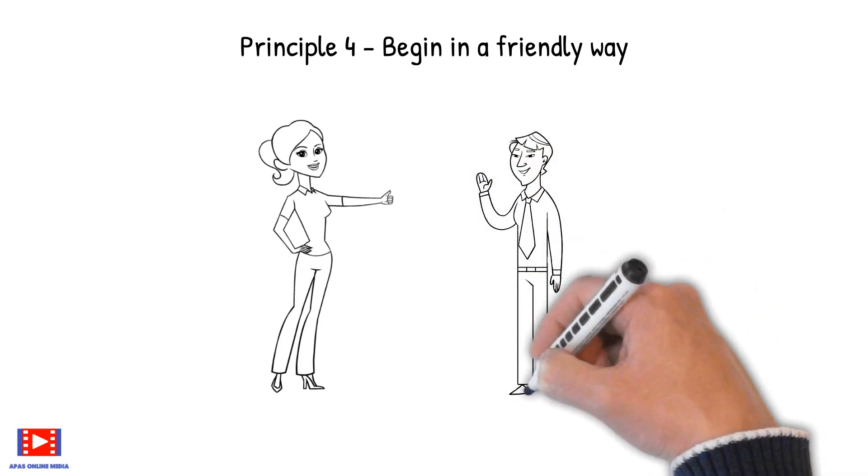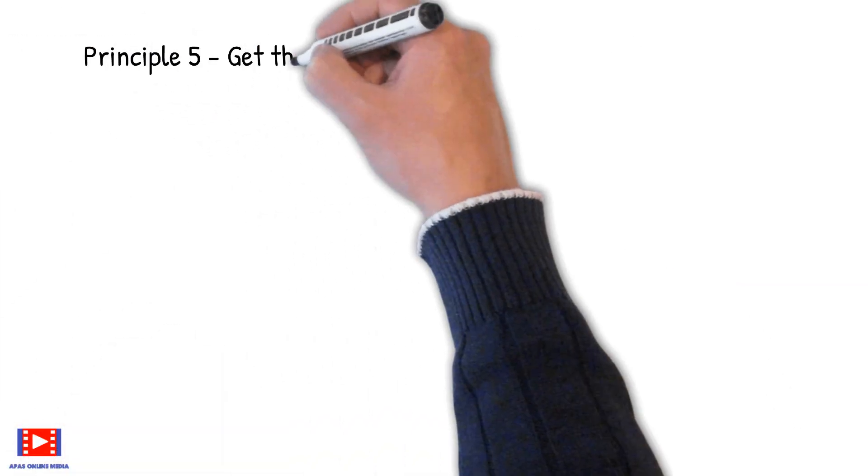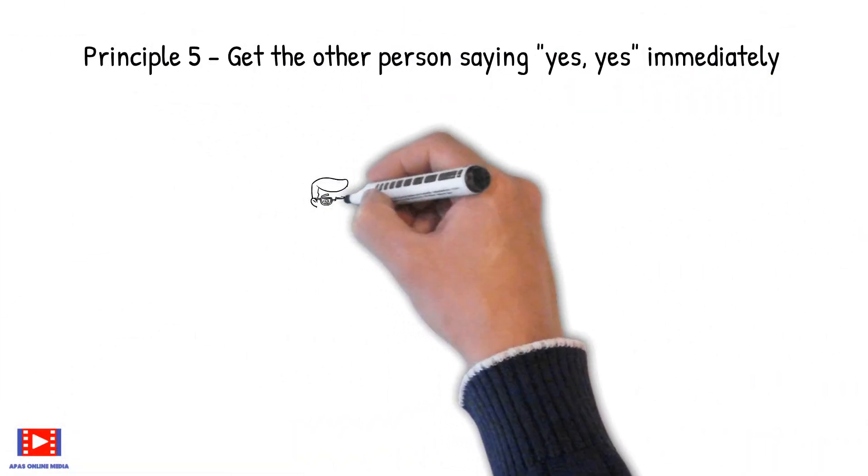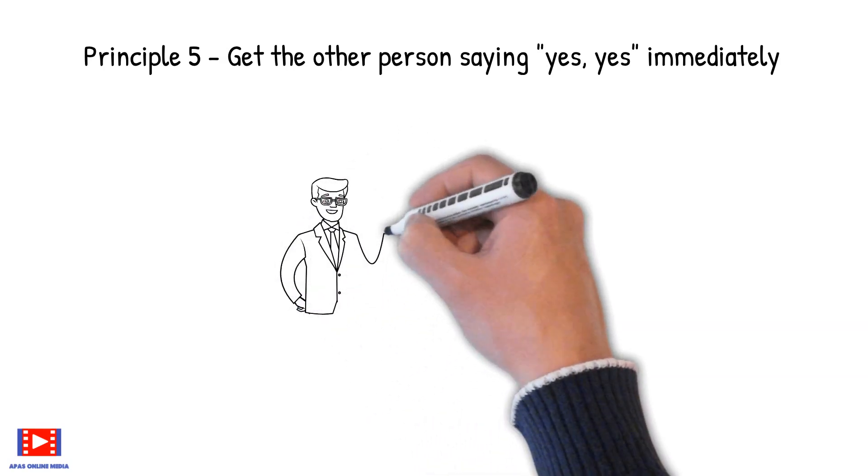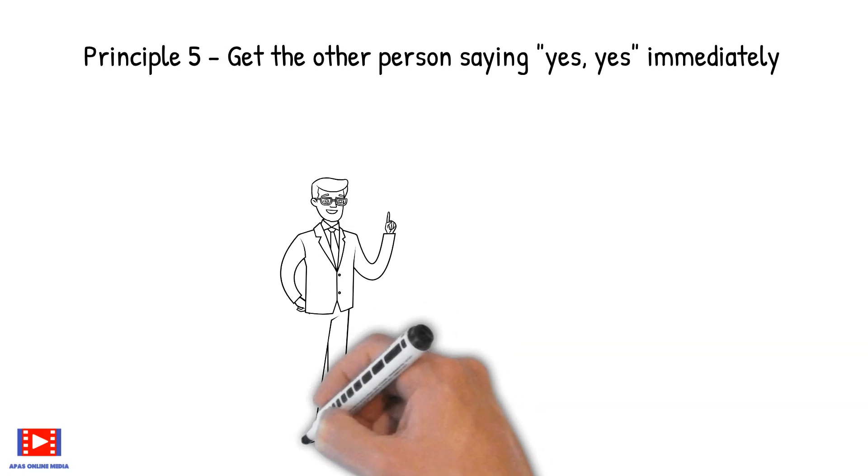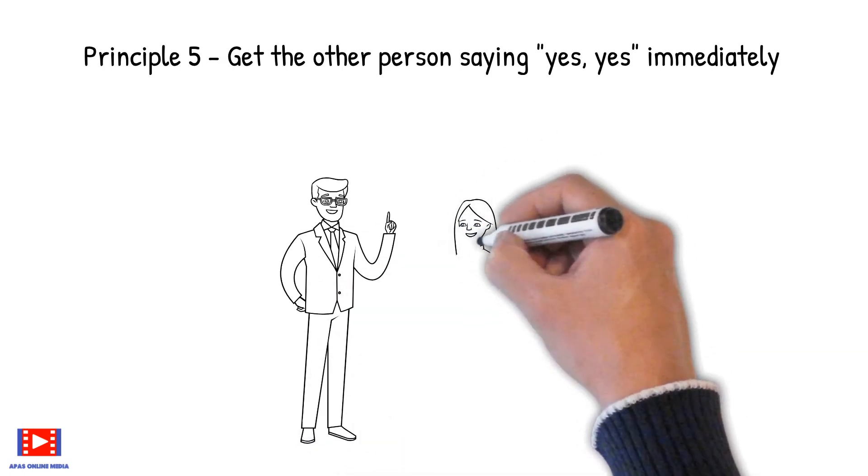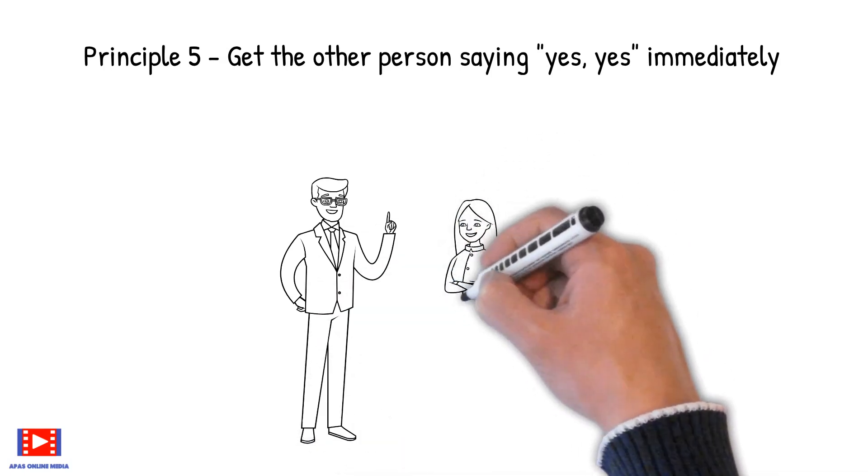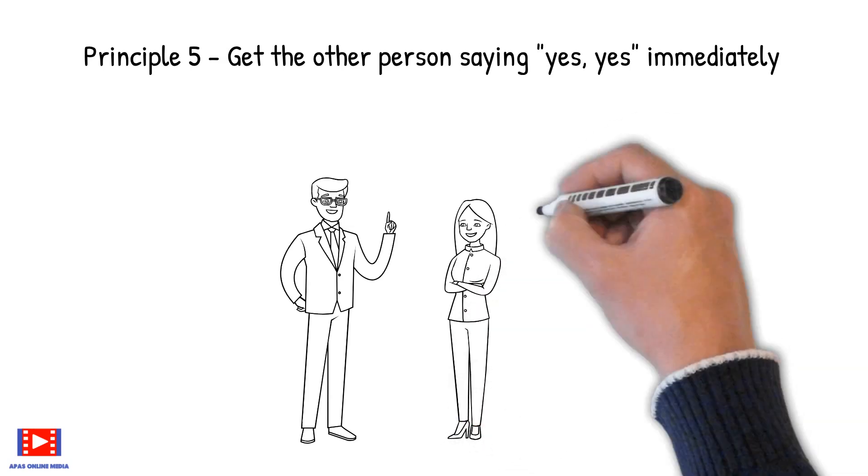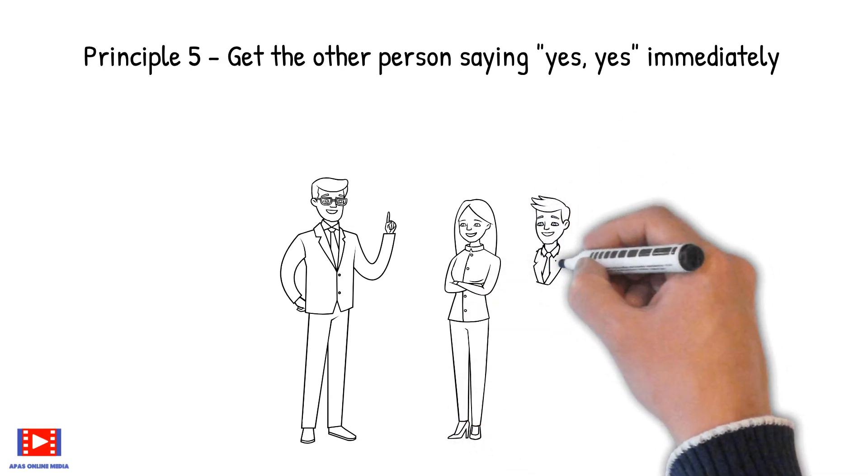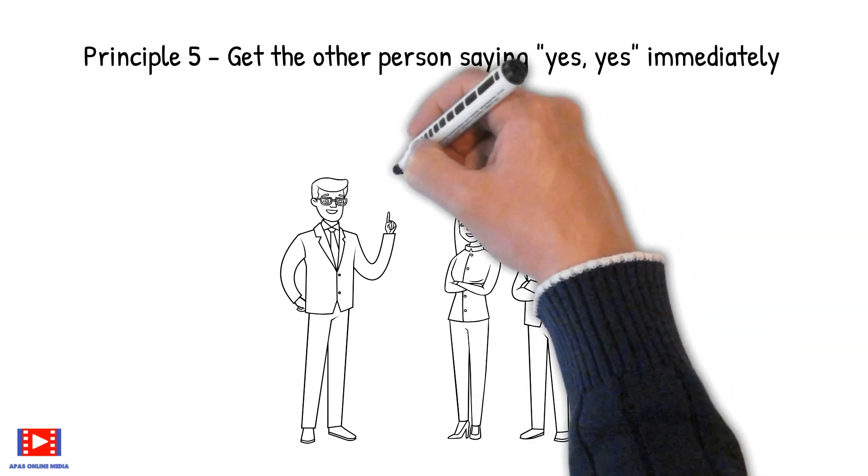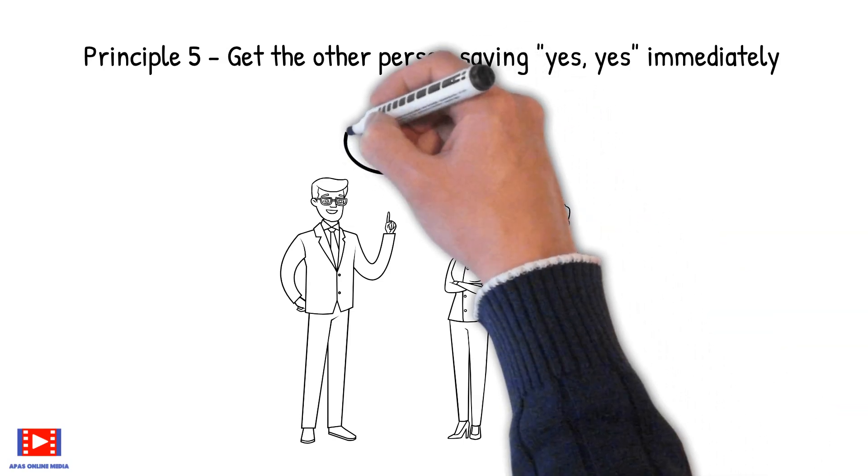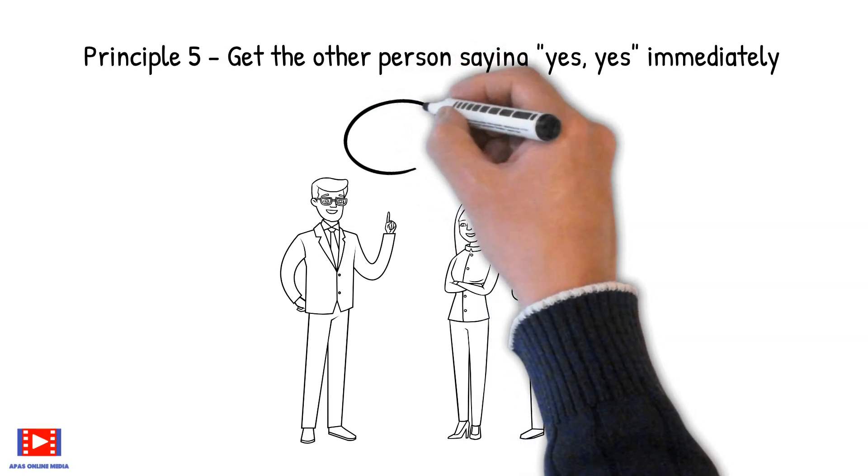Principle 5: Get the other person saying yes, yes immediately. In talking with people, don't begin by discussing the things on which you differ. Begin by emphasizing and keep on emphasizing the things on which you agree. Keep emphasizing, if possible, that you are both striving for the same end and that your only difference is one method and not of purpose.